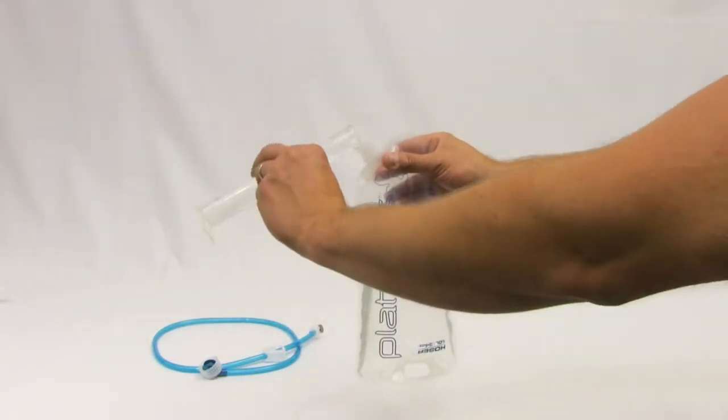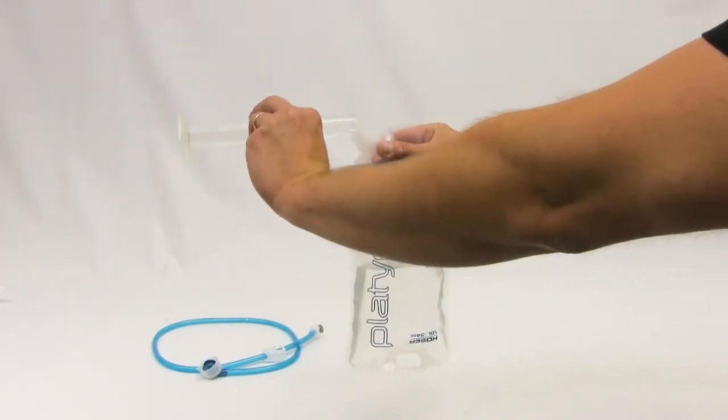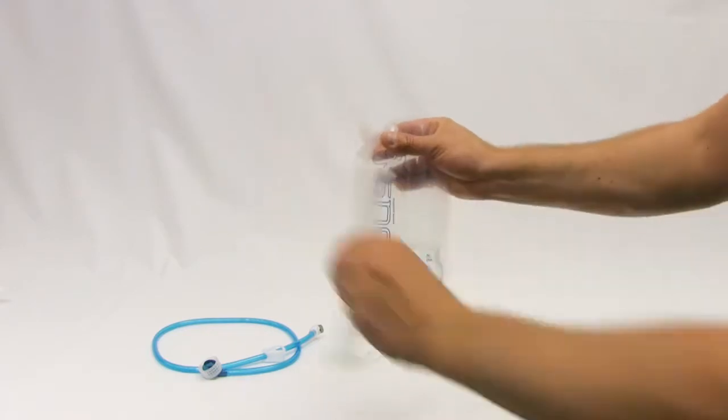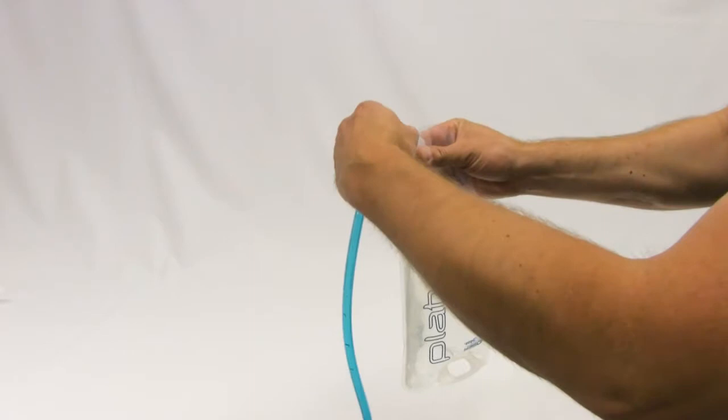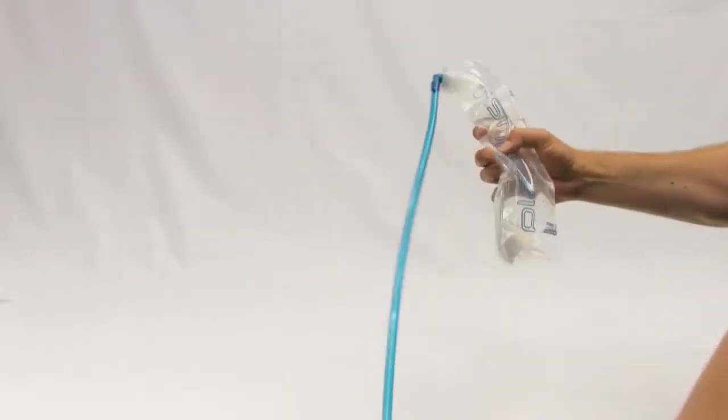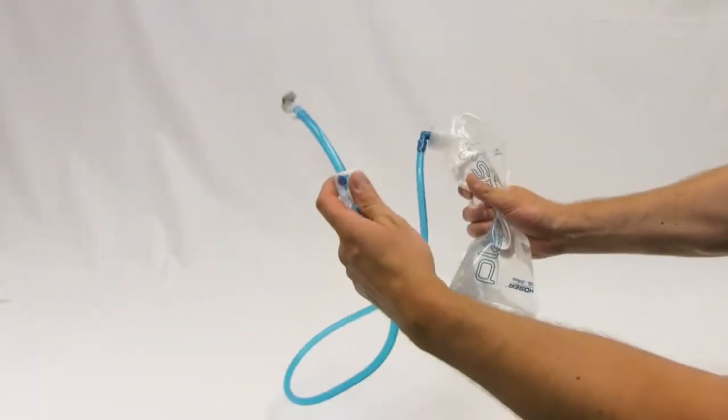Obtain a pressure infusion bag, bladder, and extension line. Fill the bladder approximately half full with colored or clear water, then reattach the extension line to the bladder. Open the clip, purge as much air as you can from the bladder, and then close the clip.